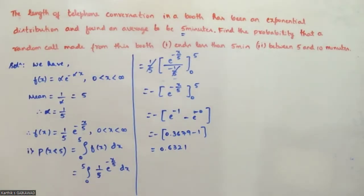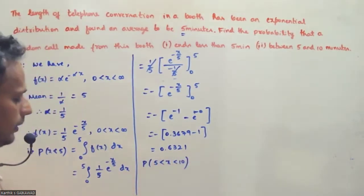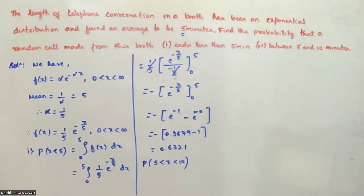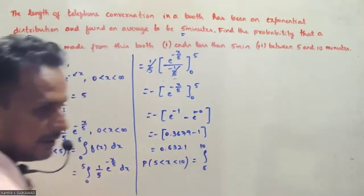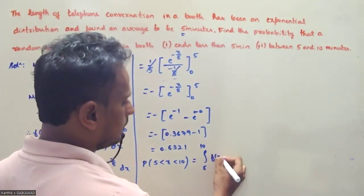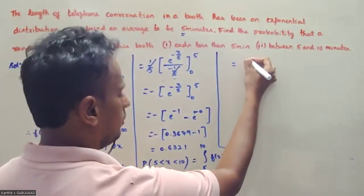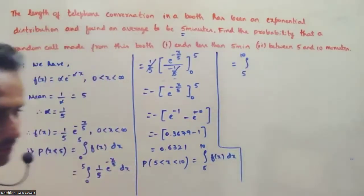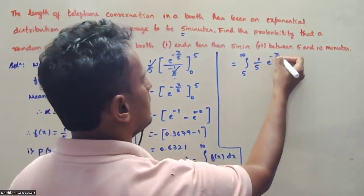Now for the second part: find P(5 < X < 10). This is the integral from 5 to 10 of f(x) dx, which equals the integral from 5 to 10 of (1/5) * e^(−x/5) dx.